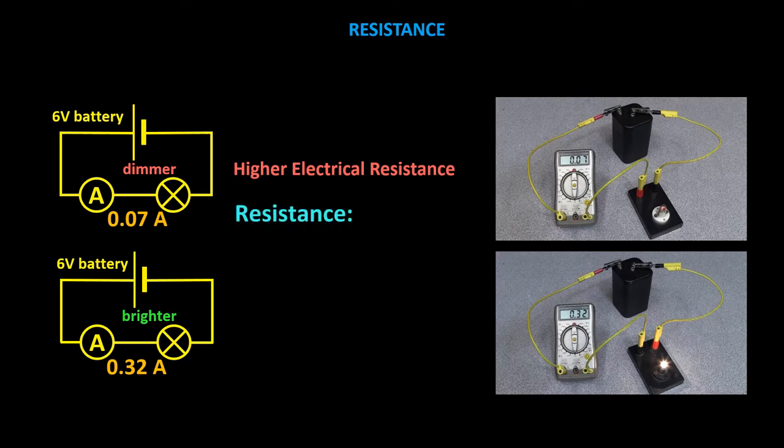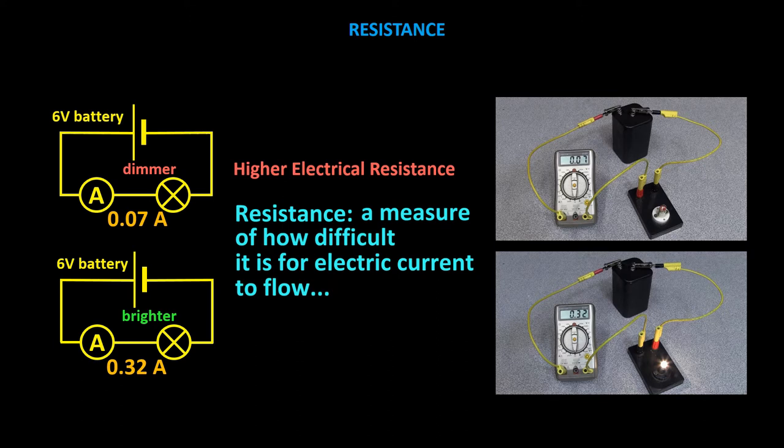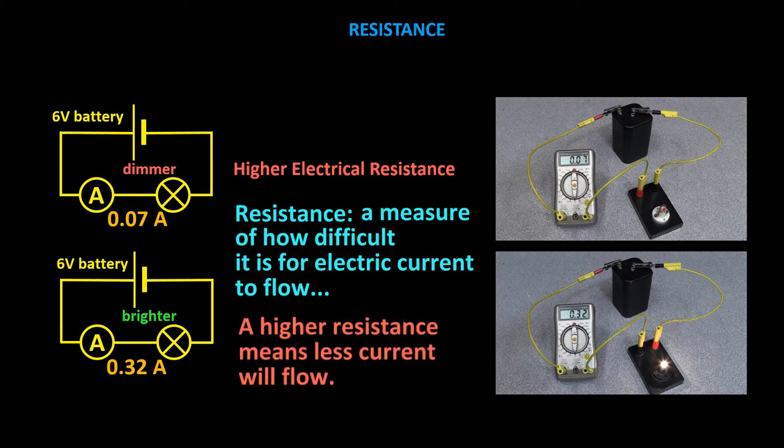The resistance of an electrical component is a measure of how difficult it is for electric current to flow through it for a given voltage applied across it. Something with a higher resistance will resist the current more than something with a lower resistance. For any given voltage, a higher resistance means less current will flow.